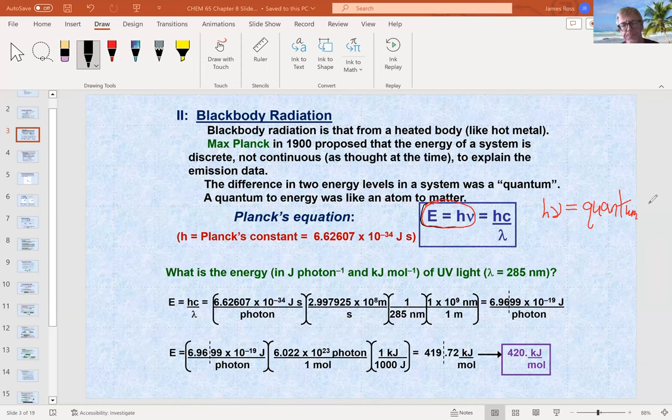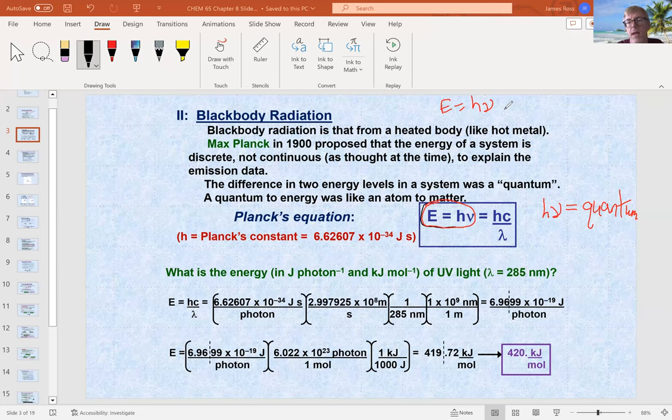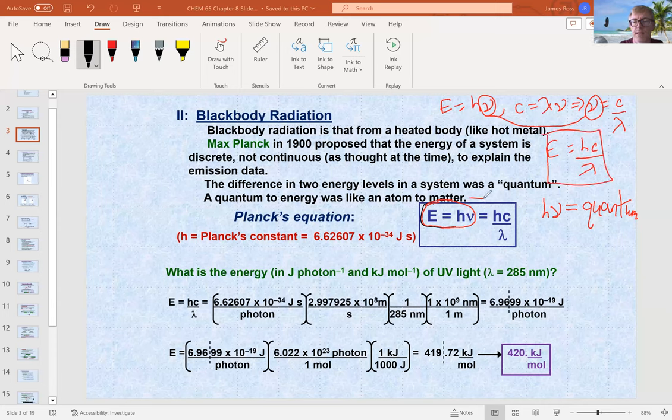So energy comes in pieces. And if we remember our previous equation, so we've got E is H nu. Energy comes in pieces, pieces called H nu, where H is something called Planck's constant. Nu is frequency or reciprocal time. And we saw in the previous slide that C is lambda nu. So if we solve for nu, then nu is C over lambda. And then if we insert nu back in here, we get E is H C over lambda.